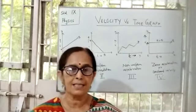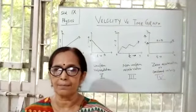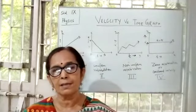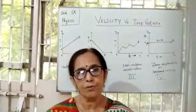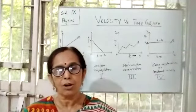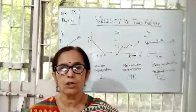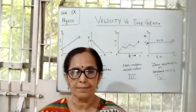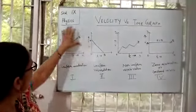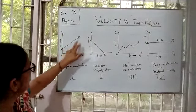An object has acceleration when there is a change in velocity with time. If this change is constant with time, then the object has uniform acceleration. When this change is not constant with time, then the object has non-uniform acceleration. Now let's look at the graph.